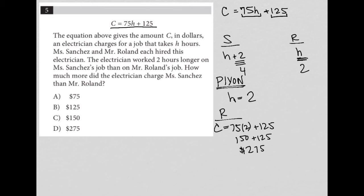But for Ms. Sanchez, because the electrician worked an additional two hours, the charge would be 75 times four plus the 125. 75 times four is 300 plus 125, which gives me $425.